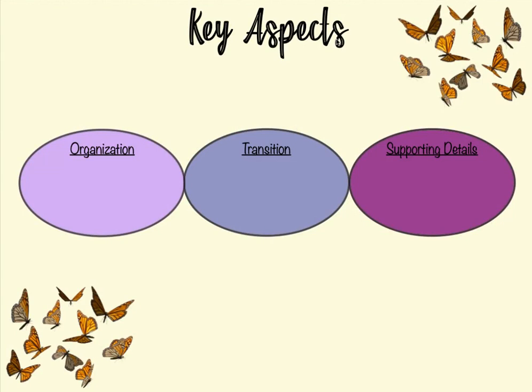For this type of writing, there are three key aspects that you should be aware of and try to keep in mind as you're either reading or composing a piece of writing. The first is organization. You want to make sure that you follow a logical sequential order when you're sharing information. You don't want to jump back and forth or present information in a random order because it can confuse the reader or the reader may just lose interest.